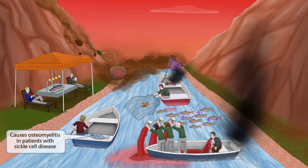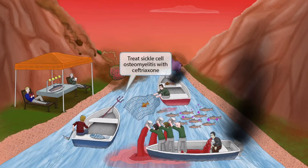Now we can see a guy in this third boat who appears to be rowing with a sickle. He apparently already caught a fish with prominent scales sitting on the back of his boat. We've included the sickle to represent sickle cell disease. The sickle next to the fish with scales should help you remember that Salmonella causes osteomyelitis in patients with sickle cell disease. This man successfully caught the fish using his trusty trident — the trident represents ceftriaxone, so patients with sickle cell osteomyelitis should be treated with ceftriaxone.